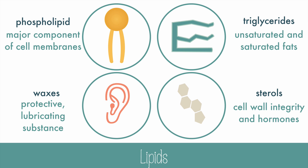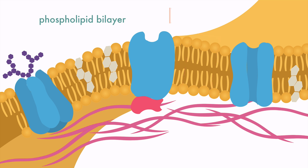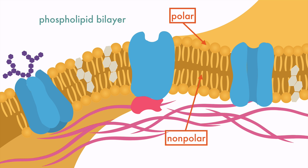Let's look at the cell membrane up close and see some of those lipids in action. The cell membrane is made mostly of phospholipids, which form a double layer called the phospholipid bilayer. The round heads of the phospholipids are polar and hydrophilic, which means that they are water-loving. The tails are nonpolar or hydrophobic, which means they are water-fearing. This is why they form a bilayer, which keeps the polar heads in the water and the nonpolar tails away from it.